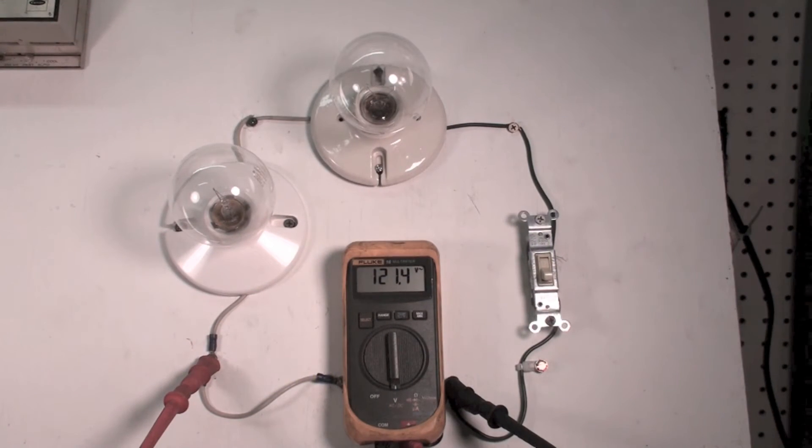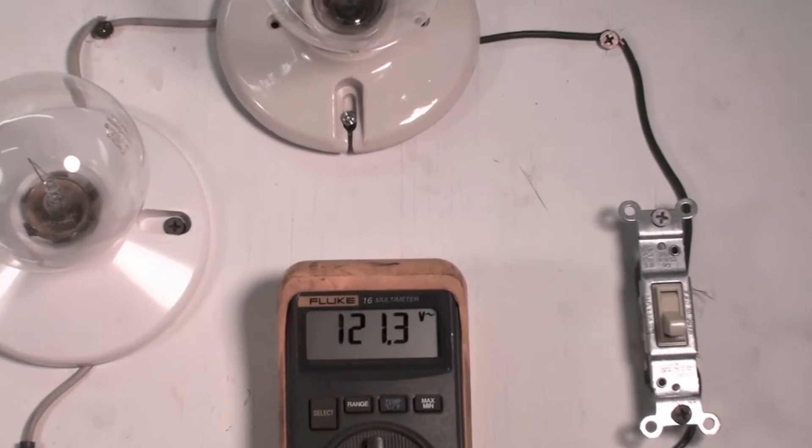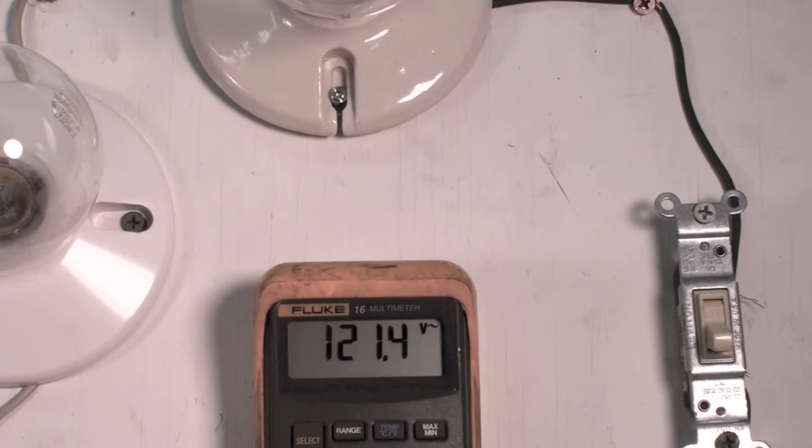Okay, on this one we're going to talk about voltage drop and series loads. You can see what I've got right here - I've got two light bulbs set up. You'll notice 121.3 or 121.4 volts.